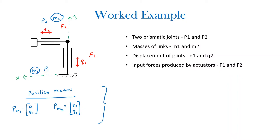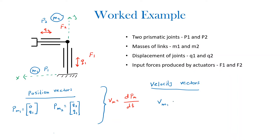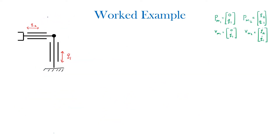The next step is to differentiate the position vectors to find the velocity vectors. The velocity vector v_m is equal to the time derivative of the position vector p_m. So v_m1 would be [0, q1_dot], and v_m2 would be [q2_dot, q1_dot]. This is because q1 and q2 are not constants, so they become differentiated when finding the velocity vectors.